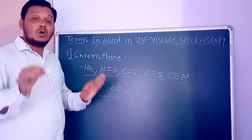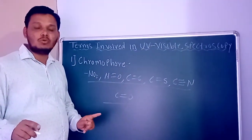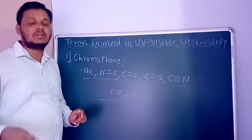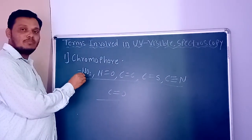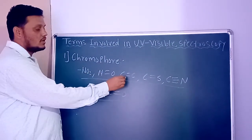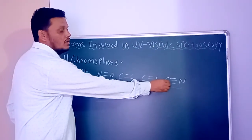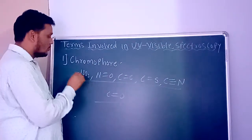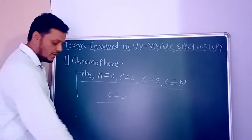To summarize: chromophore is an isolated functional group which is capable of absorbing UV radiation. Examples include NO2, nitrogen-oxygen bond, carbon-carbon double bond, carbon-sulfur bond, carbon-nitrogen triple bond, and carbon-oxygen double bond.